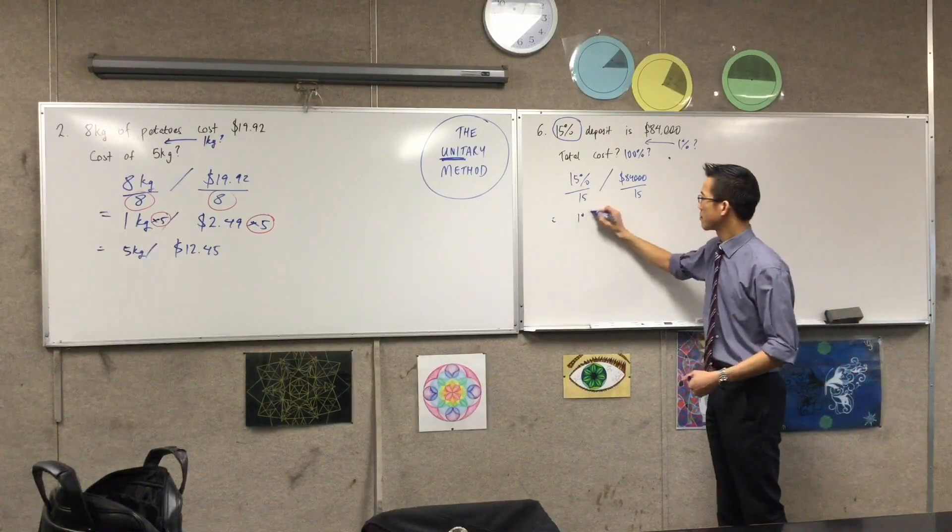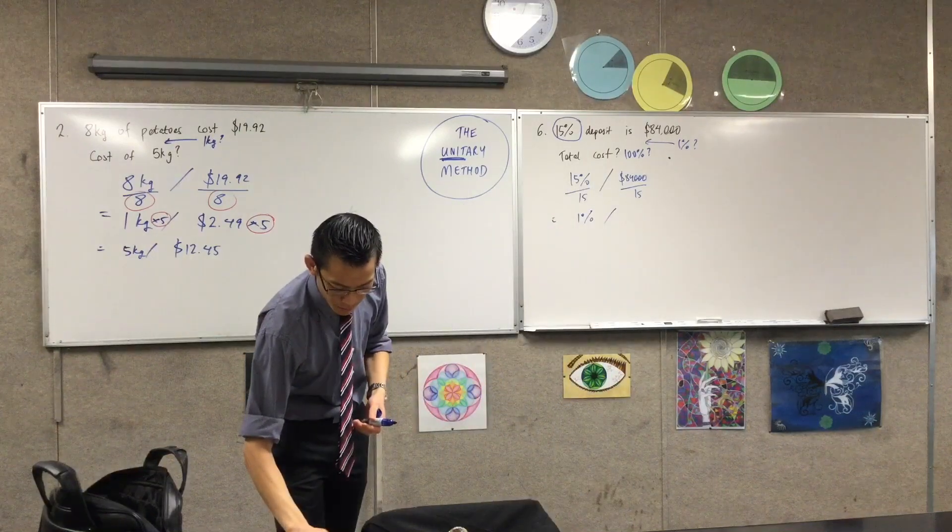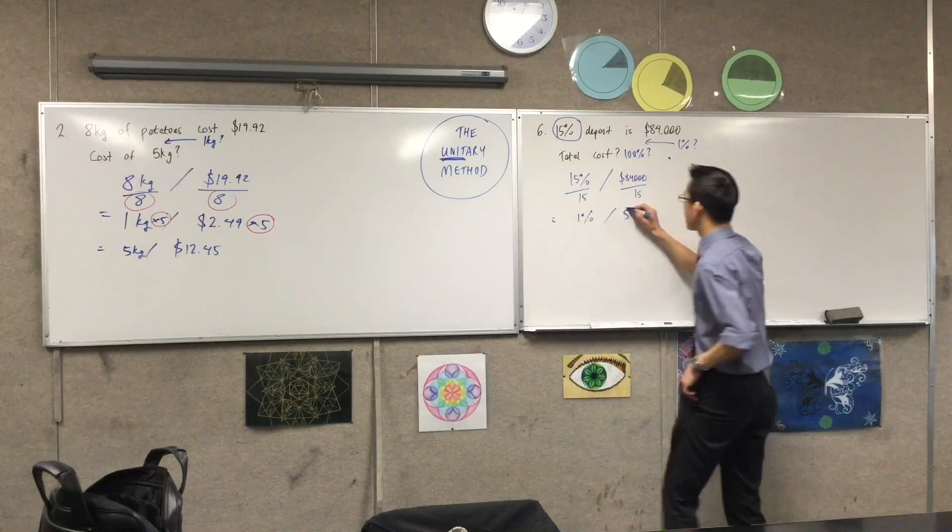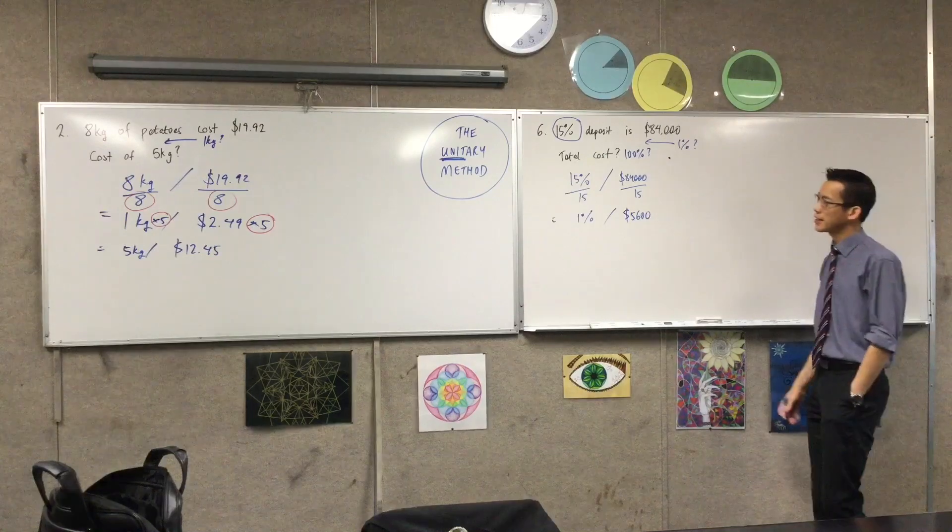That'll leave me with 1% over here. Let's just do the division. And you get this quantity. That's your 1% because you divided everything by 15.